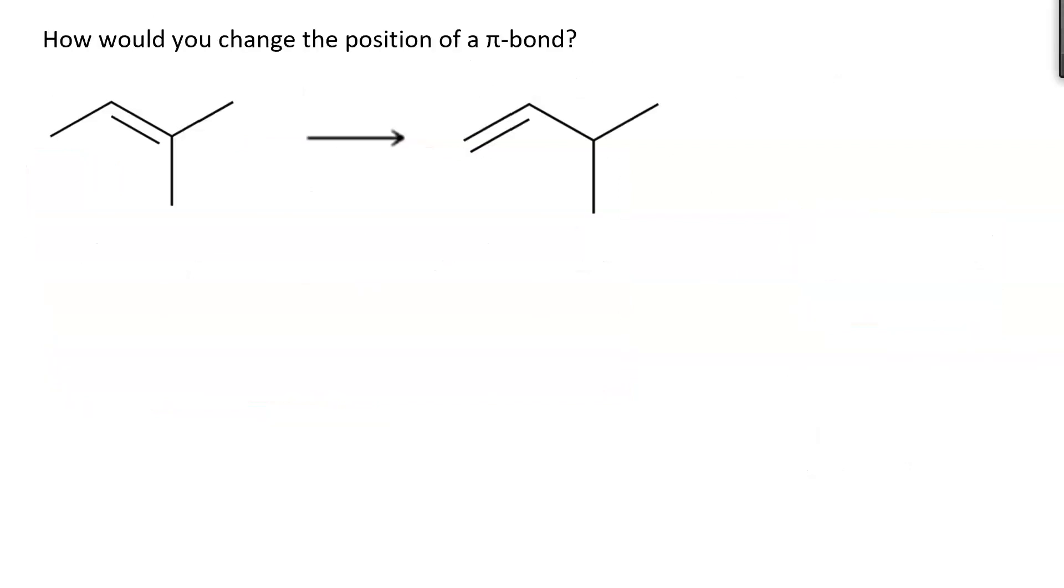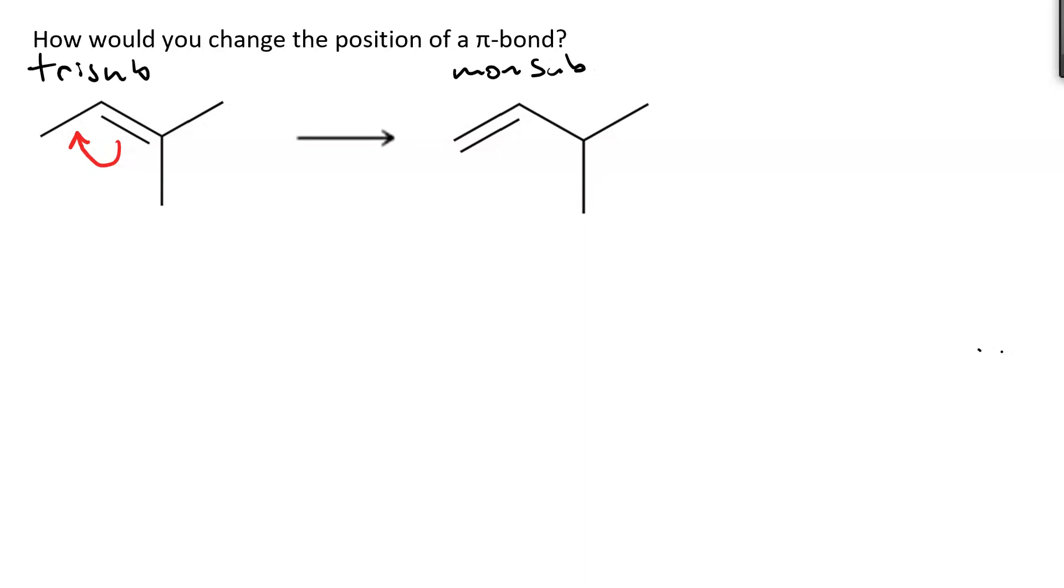How would we change the position of a pi bond? We go from a tri-substituted alkene to a mono-substituted alkene. Effectively, what we're doing is we're taking the pi bond and moving it here. But this isn't just a resonance process. We're going to have to do two steps. The first will be an addition reaction, and the second will be an elimination reaction.